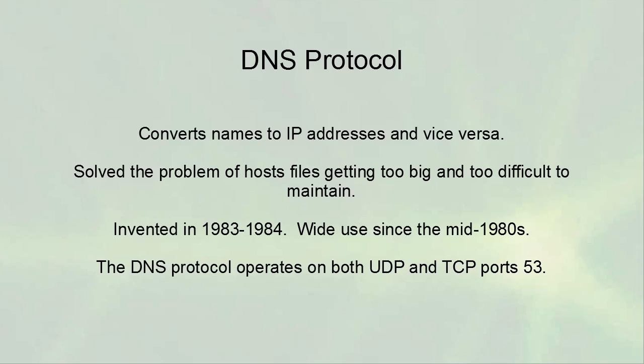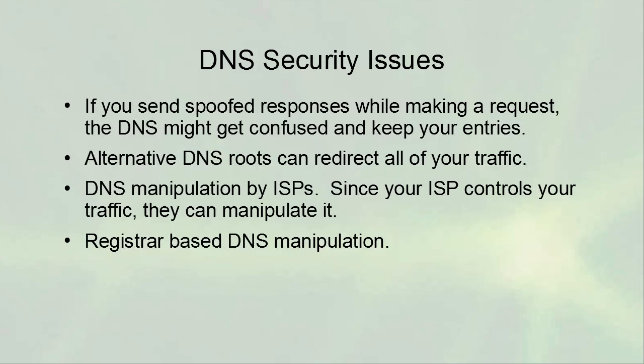People would download copies of this host file, and it became basically a regular full-time job. So the DNS protocol was invented as a solution to this problem — how do you maintain this giant host file. It became a hierarchical database of information, invented in 1983 and 1984, and has been in wide use since the mid-1980s. The DNS protocol operates on both UDP and TCP port 53 — UDP for normal inquiries, and TCP for zone transfers and things like that.